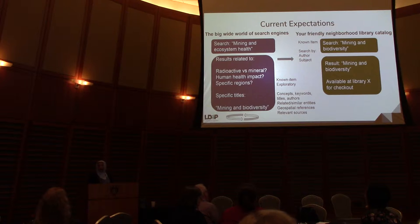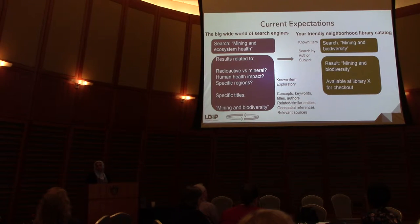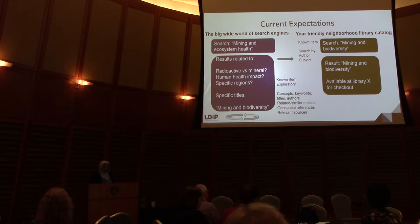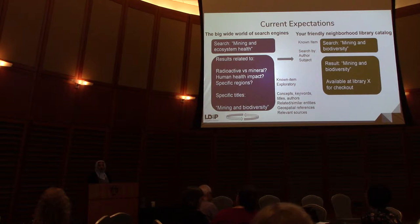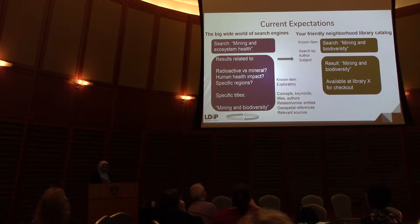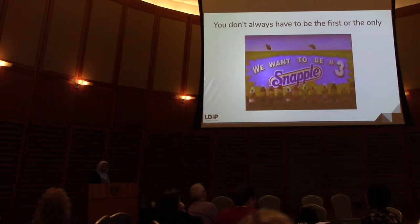By the time users end up at the library catalog, they have a title in mind or fairly close — they're doing a known-item search, looking for a particular title, maybe an author or a subject, but really they just want to get that thing and figure out which library they can check it out in. Though this is a use case we should support, we're seeing in this grant that more open-ended and exploratory tasks tend to shift to a search engine, and there's room for that need in our library catalog systems. Even if we can't be Google, there's still a way to be a very valuable and important player in the discovery lifecycle.